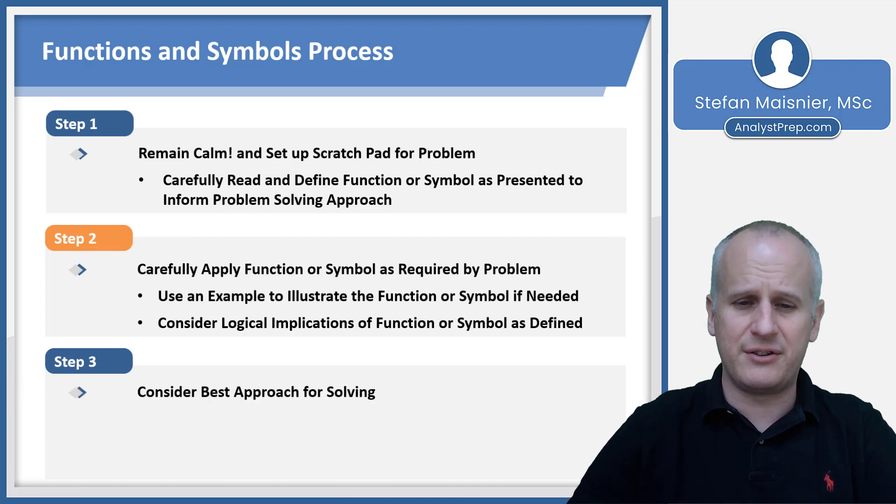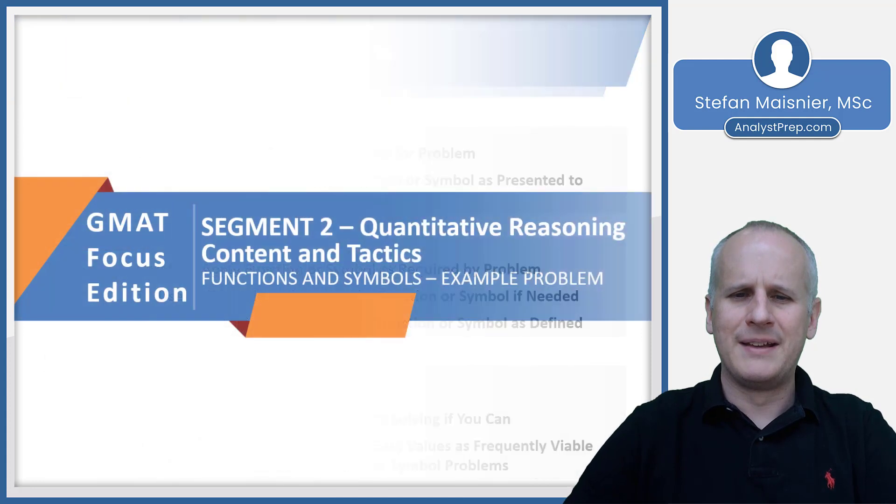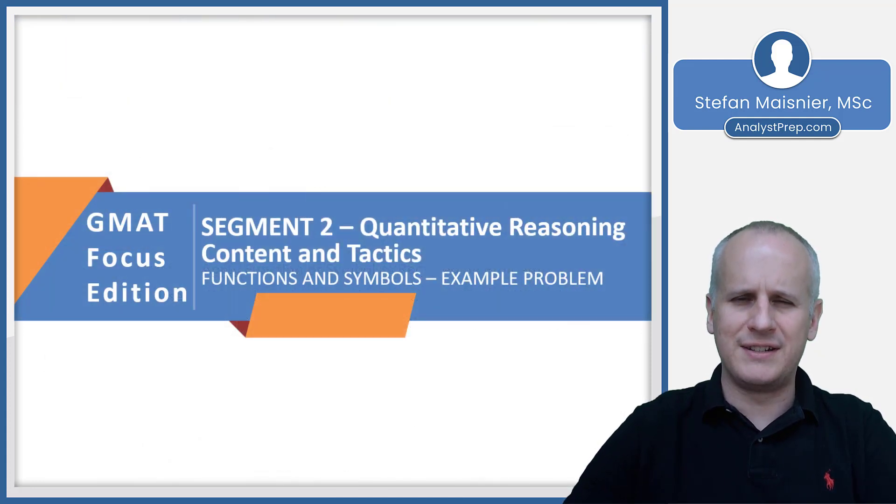Our third step is going to be to consider the best approach for solving. Take the technical or logical path to solving if you can, because that's probably most direct. But you may have an opportunity to plug in the choices or just easy values as a way to model the circumstances of the function or symbol to reach the sought solution. Now that we've talked basics of functions and symbols, let's head on over to the whiteboard and see how you'll want to execute your scratch paper and potentially work through a couple of different ways to solve one of these unique questions you'll see on the GMAT Focus quantitative reasoning section.